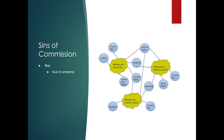Here's a schema from our textbook. We've got memory for a beach trip, memory for summer camp, and memory for a family reunion. What they're trying to illustrate is that there can be overlapping nodes. Summer camp and the beach trip both happen during summer break, and the family reunion and summer camp both include swimming.